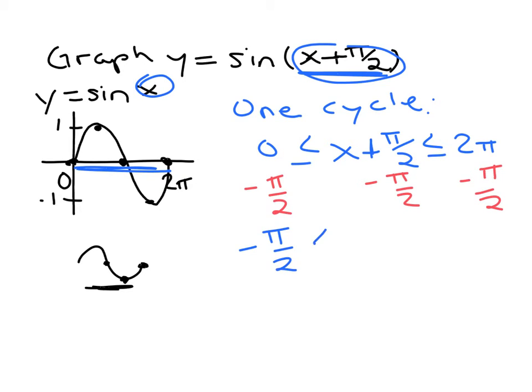If we just subtract pi over two from all three parts of this inequality, then we end up with negative pi over two less than or equal to x less than or equal to, if you do the arithmetic here, you can turn that two pi into four pi over two by multiplying top and bottom by two, and then subtract pi over two so you're left with three pi over two.